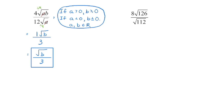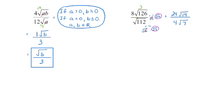For 126, the largest perfect square that divides evenly is 9, since 9 times 14 equals 126. For 112, the largest perfect square is 16. The square root of 9 gives 3, and the square root of 16 gives 4. So we have 3 times 8 = 24 with 14 remaining in the radicand, and 4 times 1 = 4 with 7 remaining. Now 24 divided by 4 is 6, and 14 divided by 7 is 2. The denominator is 1, there are no more perfect squares to remove, no radical in the denominator, and no fractions or decimals. This is simplified.